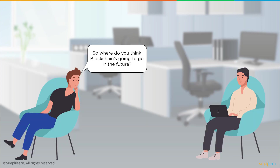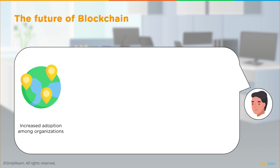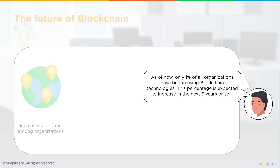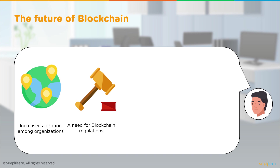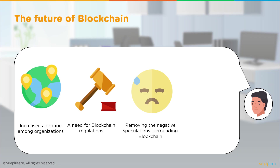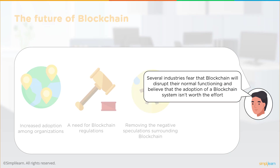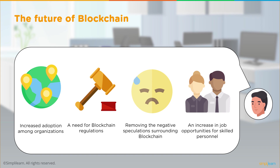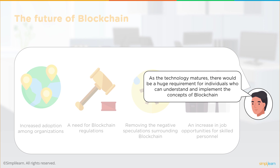Blockchain is seeing wide-range adoption among organizations. Currently, only 1% of all organizations have begun using blockchain technologies, but this percentage is expected to increase in the next five years. There is a need for clearer blockchain regulations, as current rules aren't clear enough for organizations to be comfortable adopting it. Several industries fear blockchain will disrupt their functioning. However, there is a growing increase in job opportunities for skilled blockchain personnel as the technology matures.